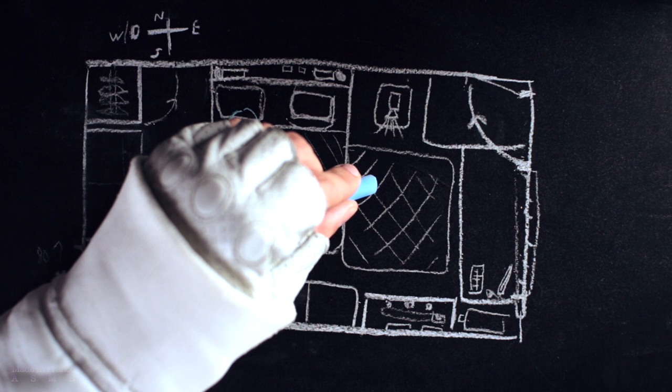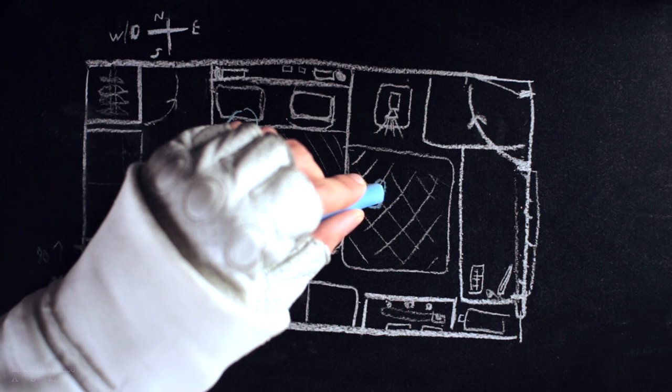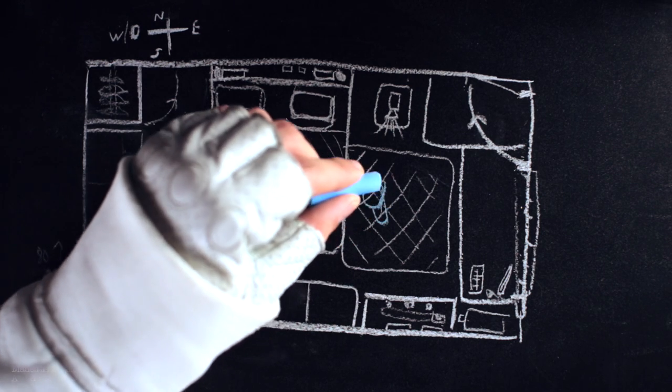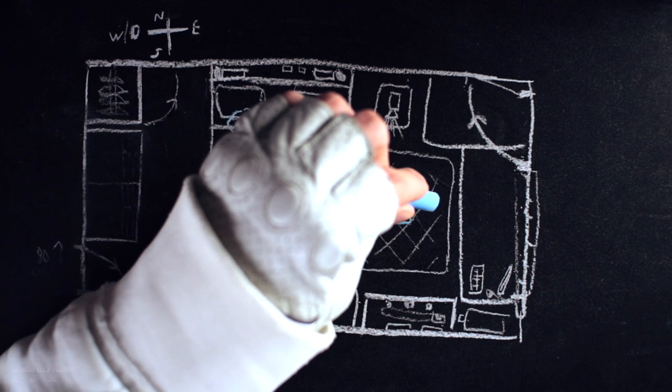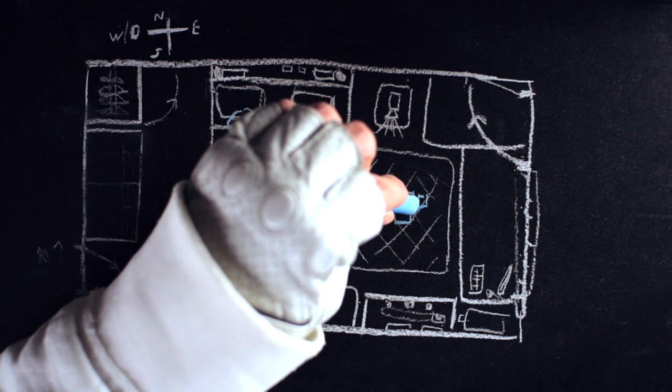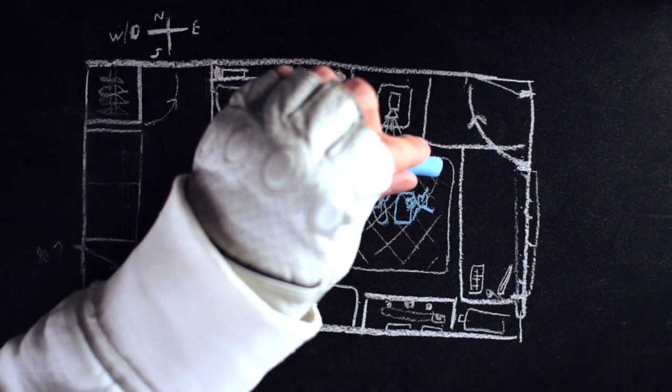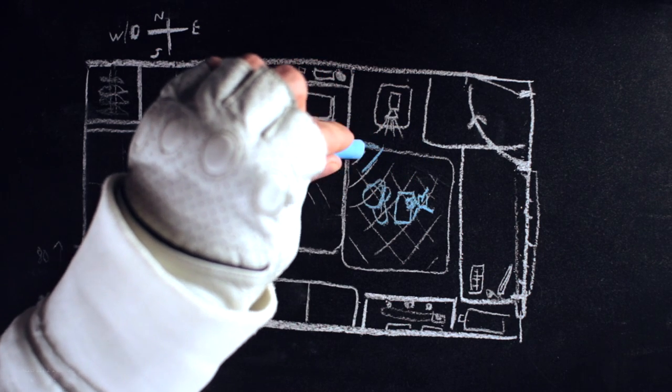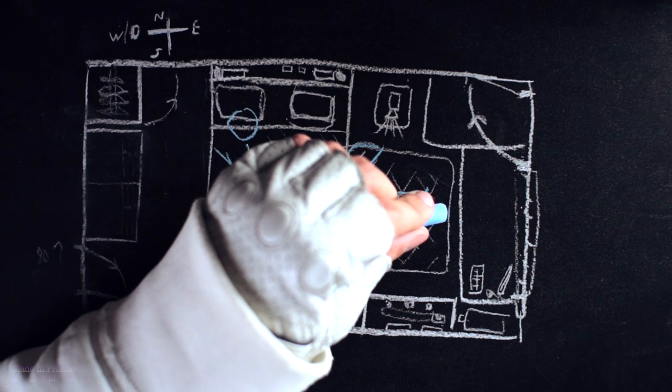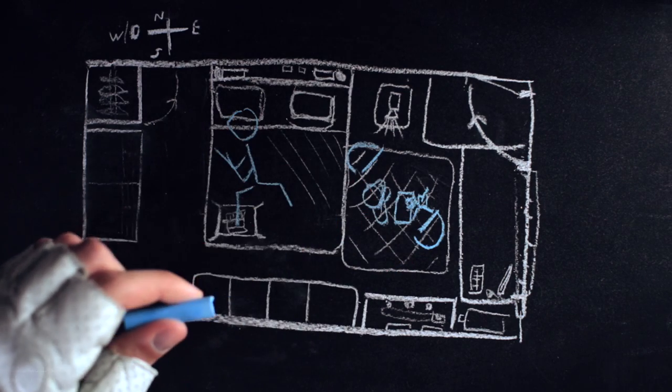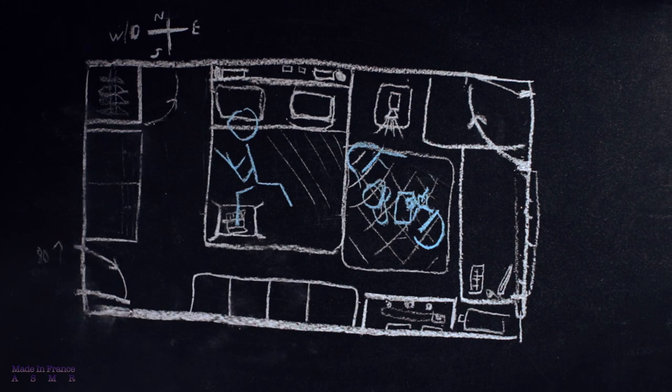And right now I am recording here. This is my head. This are my knees. This is the blackboard. This is the camera with the tripod. Some lights is behind me. So here. And the other light is just right here. Like this.